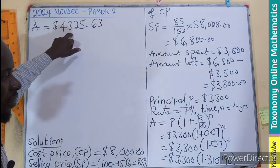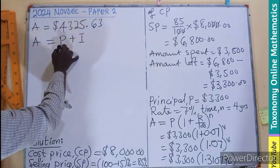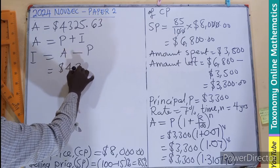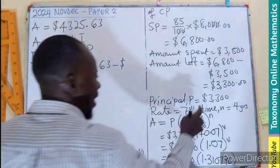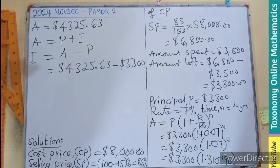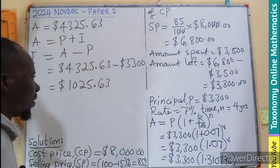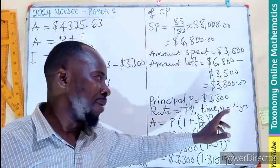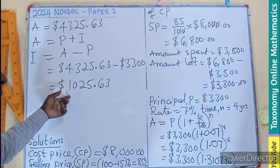This is the amount, but we are looking for the interest. We know that Amount = Principal + Interest. Therefore, Interest = Amount − Principal. So $4,325.63 minus the principal of $3,300 gives us an interest of $1,025.63. This is the interest earned when this money is kept at compound interest for 4 years at a rate of 7%.